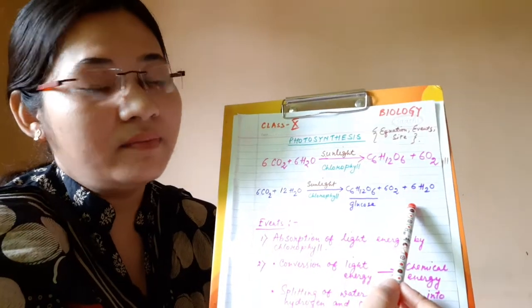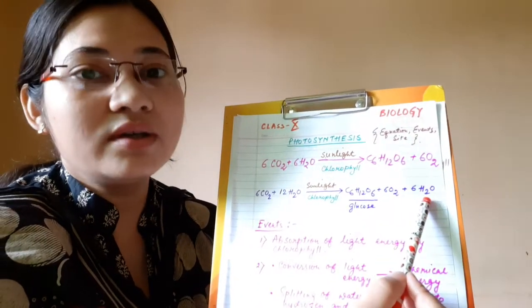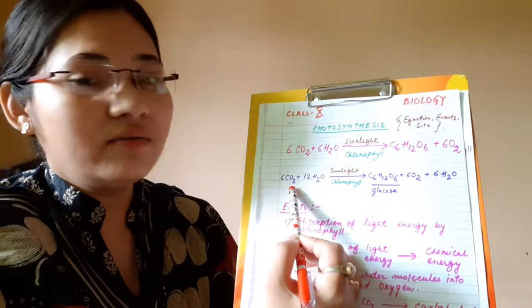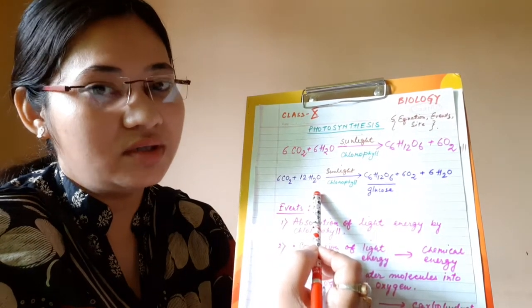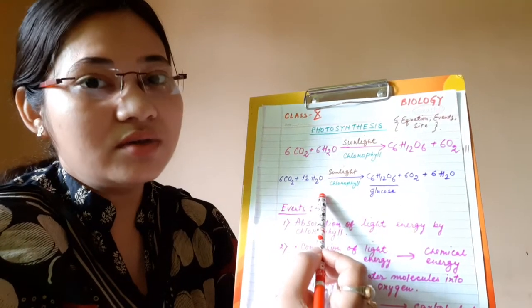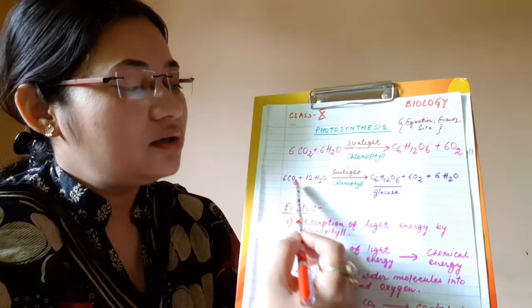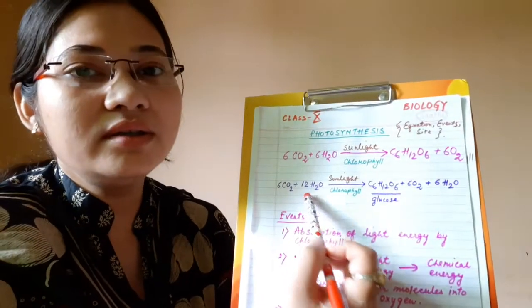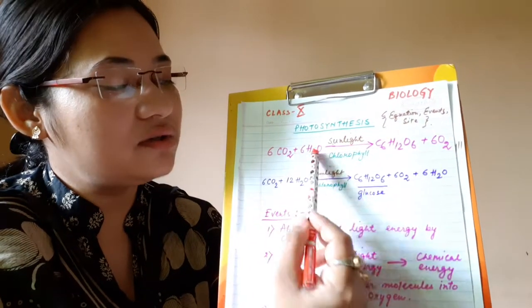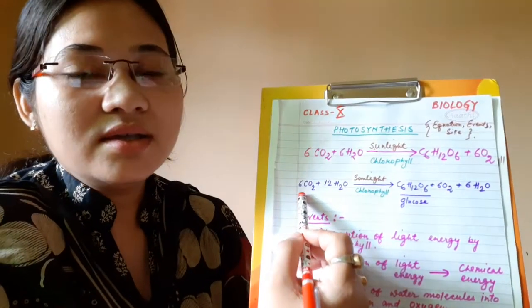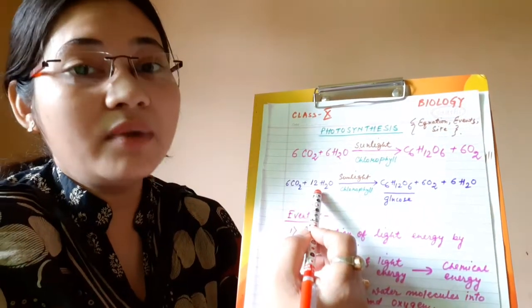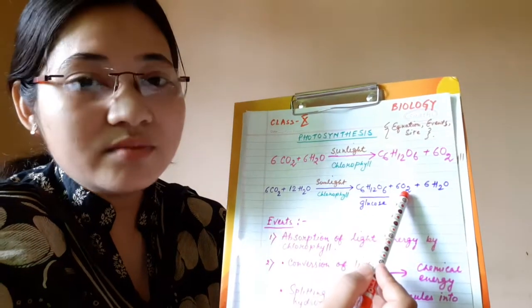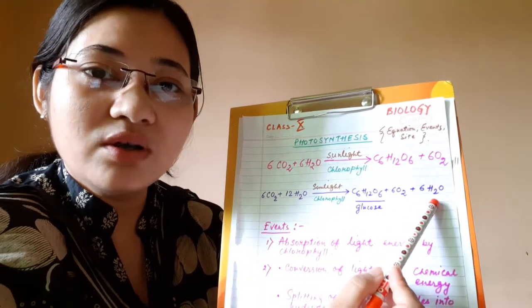Because you are in Class 10, you should also know that some amount of water is also generated during photosynthesis. This is a balanced chemical equation for photosynthesis that I would request you all to memorize. Here, six molecules of carbon dioxide react with 12 molecules of water to produce one molecule of glucose, six molecules of oxygen, and six molecules of water.